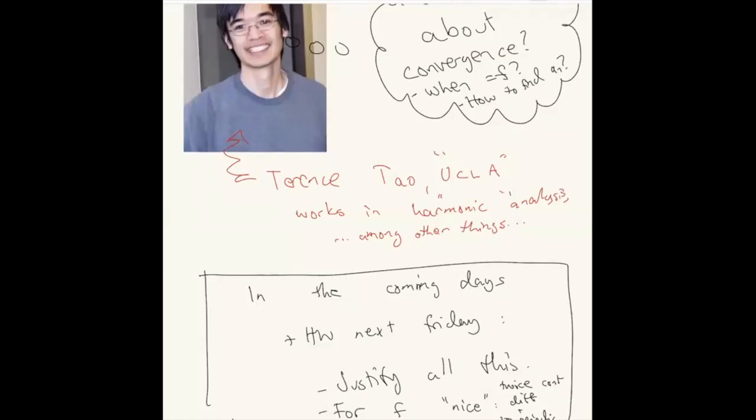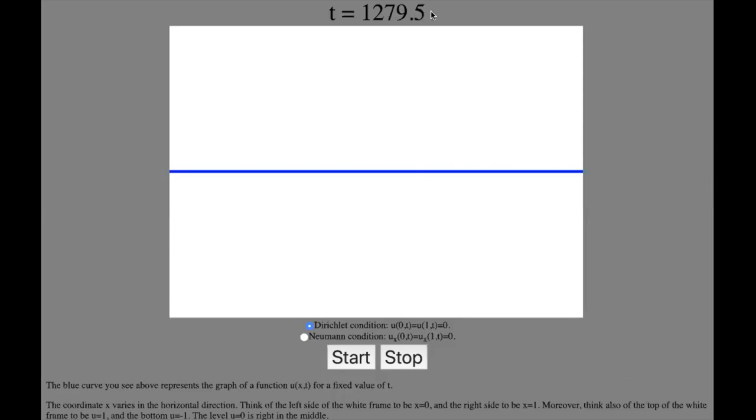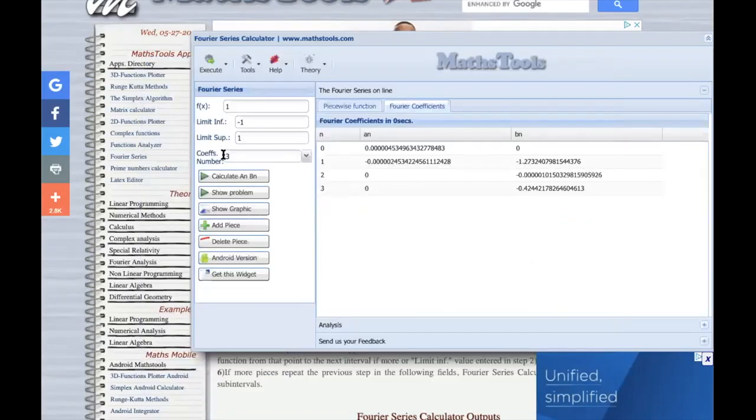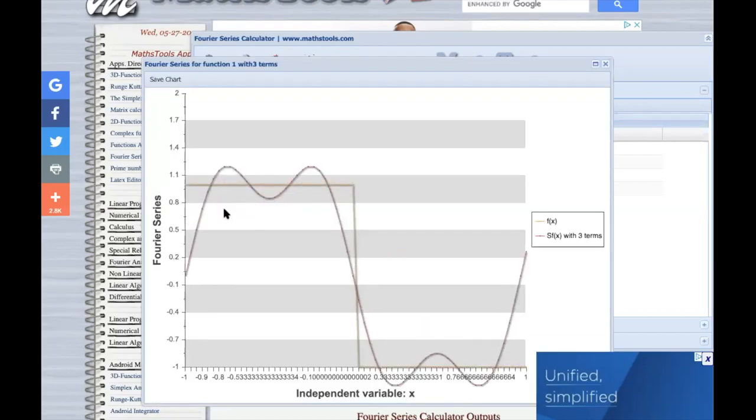Before we start talking about complex numbers, I want to do another short demonstration just to see what we're actually talking about. This is stolen from another website. It's showing here I can control the number of coefficients of Fourier series I've been taking. There was a small thing about cosines we'll get to later. Here you have this so-called Heaviside type function: it's equal to 1 from -1 to 0, then from 0 to 1 it's equal to -1. This would be the first three terms of the Fourier series.